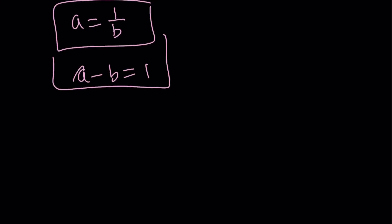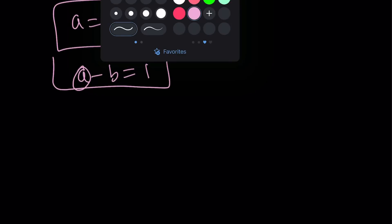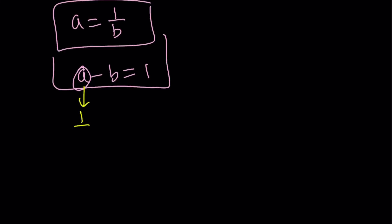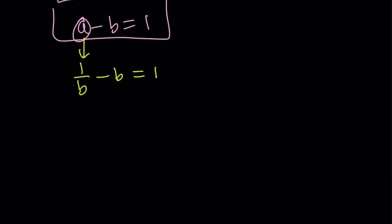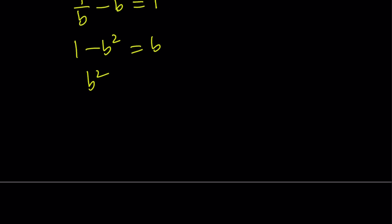I'm going to replace a with 1 over b here. And that's going to give me 1 over b minus b is equal to 1. By the way, a and b are not interchangeable because their difference is 1. So you can't really interchange them. We're going to find the b values from here anyways. So let's go ahead and multiply both sides by b. 1 minus b squared is equal to b. Put everything on the b side. b squared plus b minus 1 is equal to 0. As you know, this is a quadratic equation, and it has two solutions.